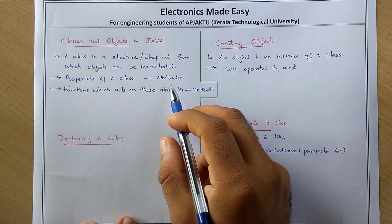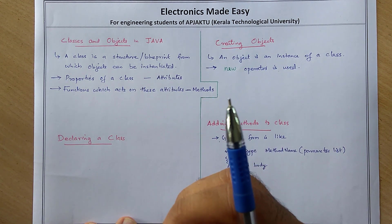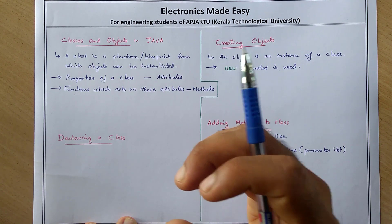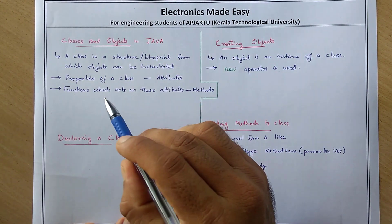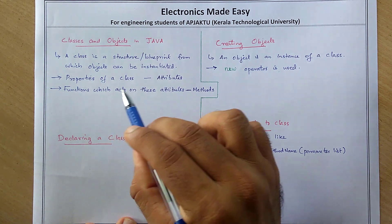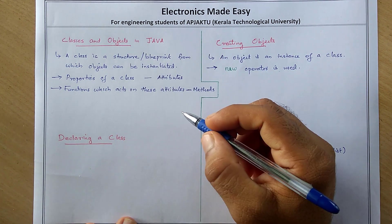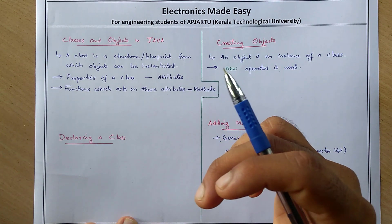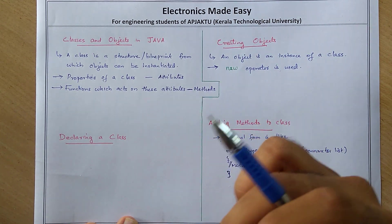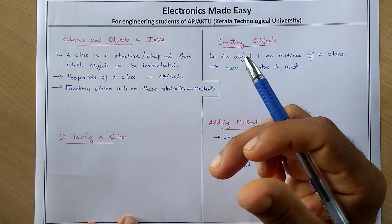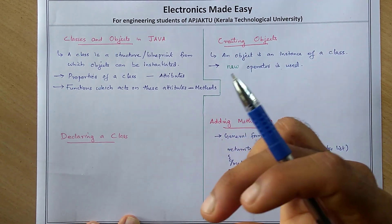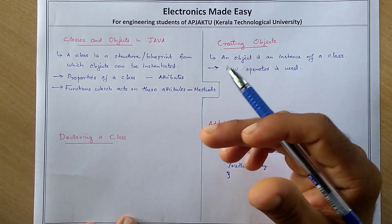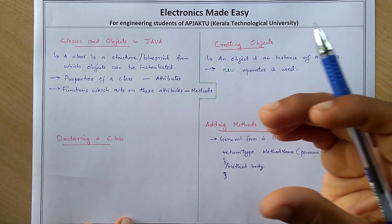If you want to create an object, we will need a class — that is a blueprint for creating an object. This class will have properties like, suppose we have a class 'Faculty'. This Faculty will have properties like a faculty ID, faculty name, joining date, date of birth, and so on. All these properties are called attributes.